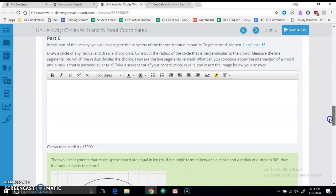Now going down to B, we're going to do the converse, and so we're going to open up GeoGebra again. It says draw a circle of any radius and draw a chord on it. Construct the radius of the circle that is perpendicular to the chord.